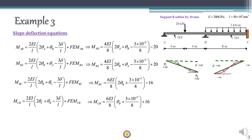Before writing the equations, note what happens due to support settlement at B. When support B settles down, span AB rotates clockwise, which means both theta values are positive and delta is also positive. Delta is the difference in vertical displacement at A and at B — delta_A is 0, delta_B is 10, so delta equals +10.